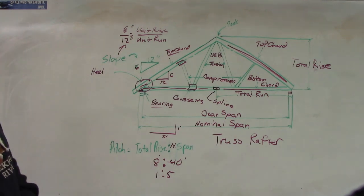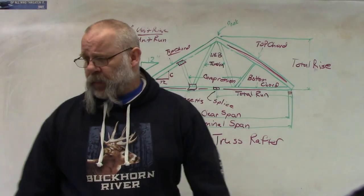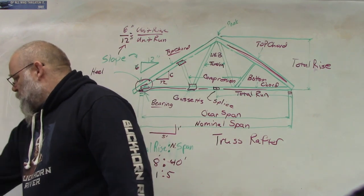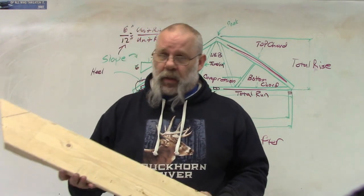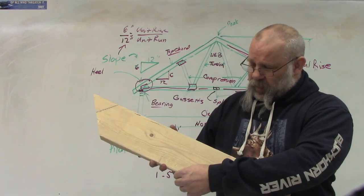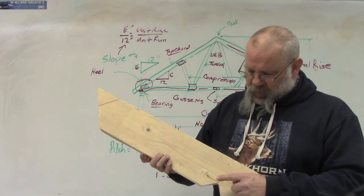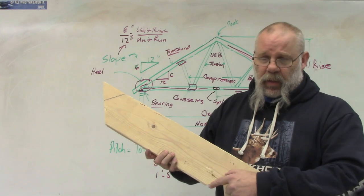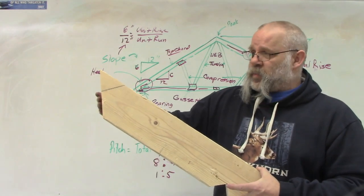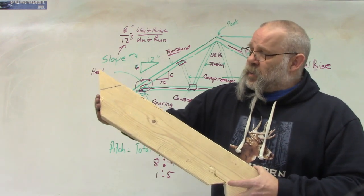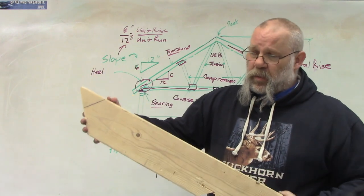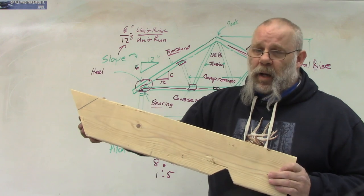Now let's look at some stick built rafters. The first one is a common rafter. How can you identify a common rafter? A common rafter is going to have a bird's mouth — that's this notch right here — and at this end it's going to have a plumb cut, which means it's cut at zero on your circular saw with the slope of the roof. So this would be a common rafter.